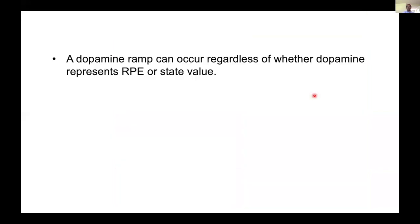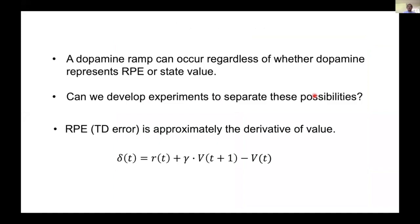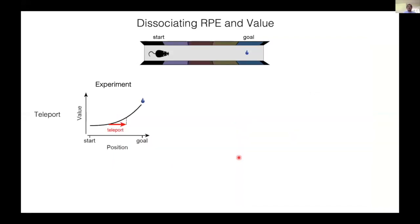So a dopamine ramp can occur regardless of whether dopamine represents RPE or state value. We therefore sought to develop a set of experiments to separate these two possibilities. We wanted to do so with less assumptions, basing on the original definition of TD errors, and more specifically the derivative-like property.